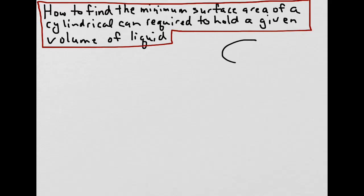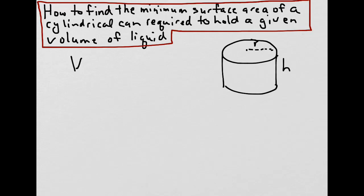Let's say we had a cylinder of a certain radius R and a certain height H. And let's say that we wanted to find the minimal amount of material that would be required to manufacture this can to hold 750 milliliters of liquid.